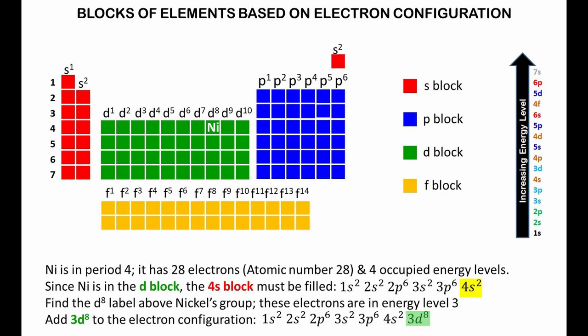This diagram classifies elements into blocks based on the electrons in the highest occupied energy sublevels. This is very useful to determine the electron configuration of an element. Let's take nickel as an example. Nickel is in period 4, so it has 4 occupied energy levels. It has 28 electrons, since it has atomic number 28. Since nickel is in the D block, the 4S block must be filled. Find the D8 label above nickel's group. These electrons are in energy level 3, considering the energy levels of the orbitals. Add 3D8 to the electron configuration, and there you go.